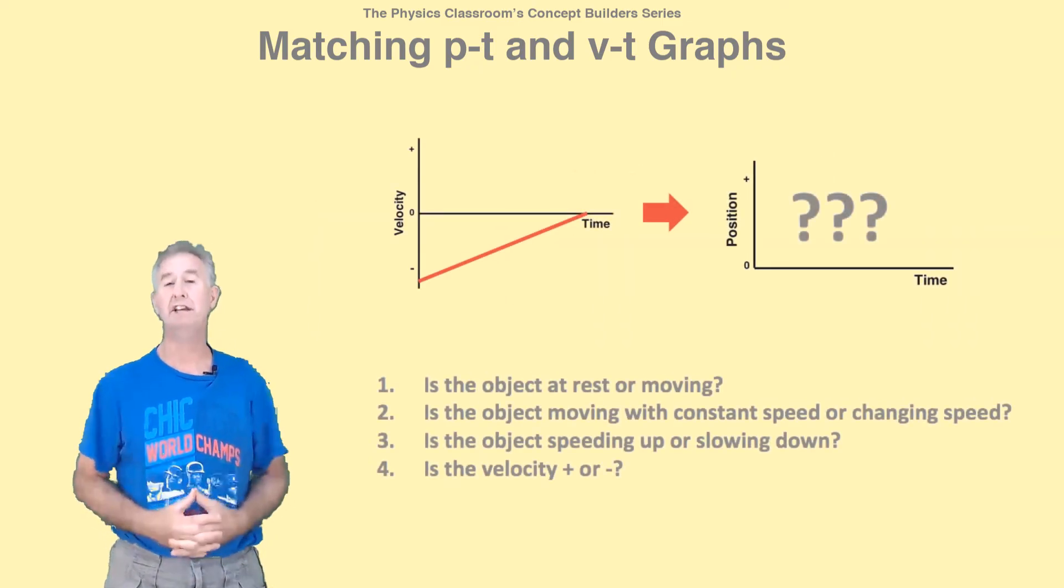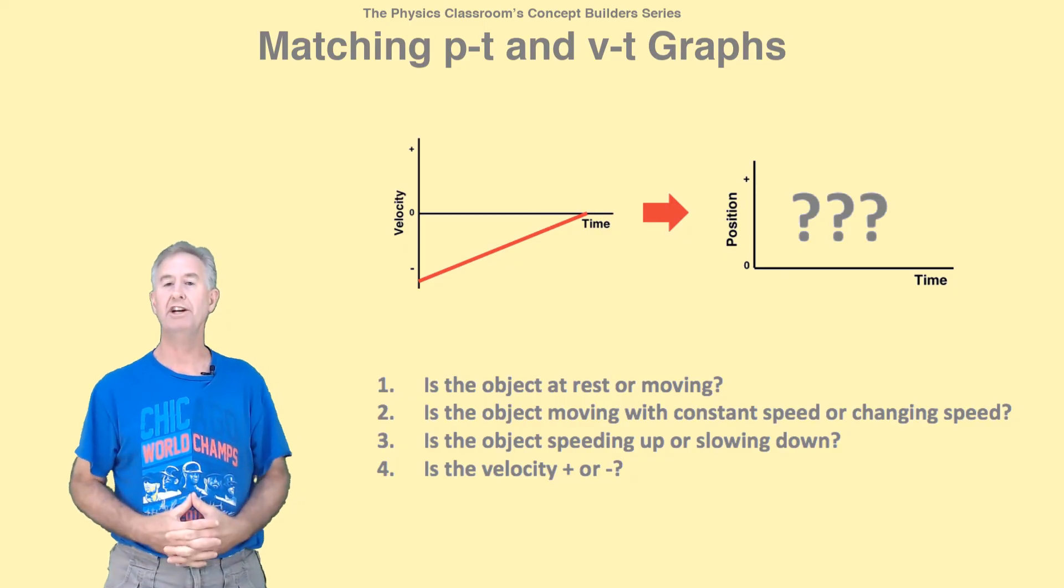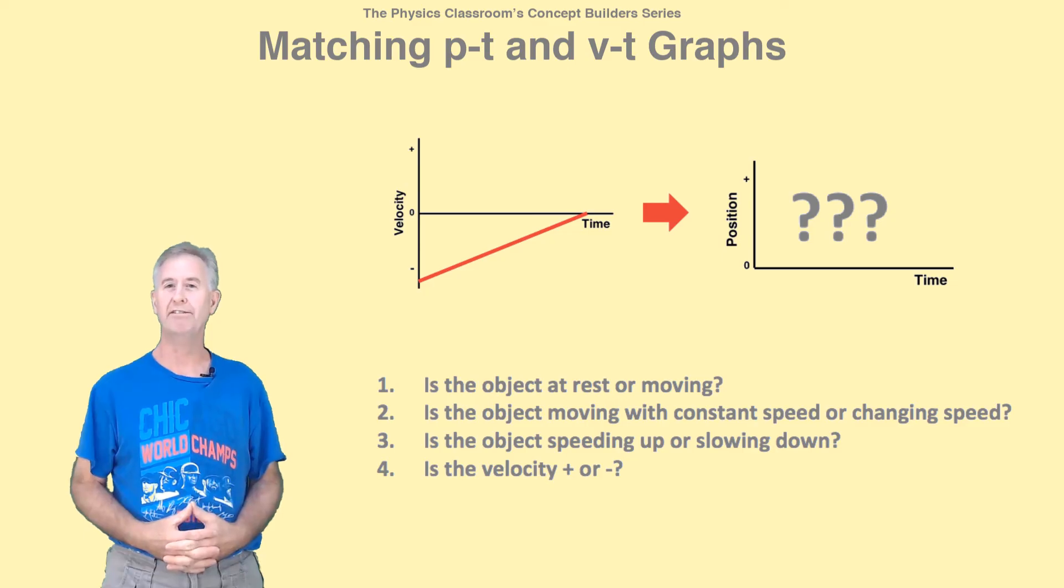If you're given a VT graph and have to match it to a PT graph, use the same strategy. First change the VT graph to words, and then the words to a PT graph.